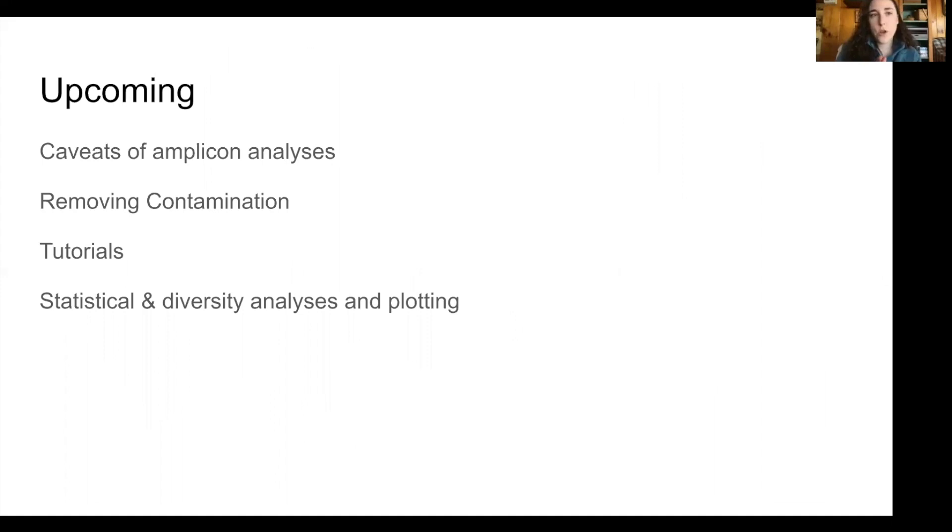And so that's it for the intro. Upcoming after this, we'll start to talk a little bit about the caveats of some of these analyses. We'll get into removing contamination. There's a lot of sources of contamination, no matter what type of samples you have. So it's important to remove those. And then we're going to go through some tutorials, both for analyzing amplicons and all of these pre-processing steps, as well as analyzing them statistically and looking at things like diversity and making plots.